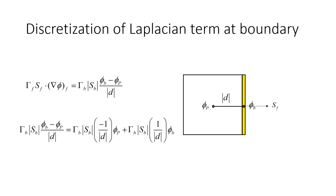Next is the discretization of the Laplacian term at the boundary. I'm directly writing the Laplacian discretization here. phi_p is the center of the nearest cell to the face, and the face center has the value phi_b. phi_p and phi_b are at a distance of magnitude d. On the face, the normal is the surface area normal vector pointing outward, which is S.